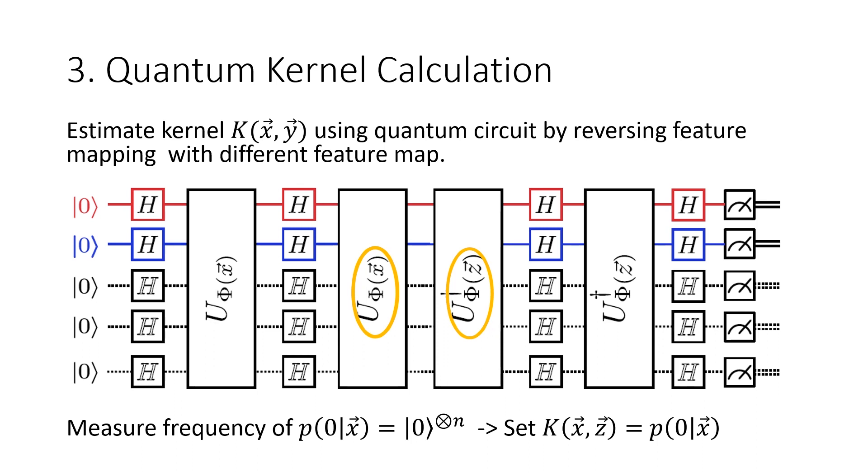If x is close to z, then U_x is close to U_z, and the result of the circuit has a large amplitude in the all-zero state. This amplitude is essentially a distance between states x and z, and estimates the kernel.